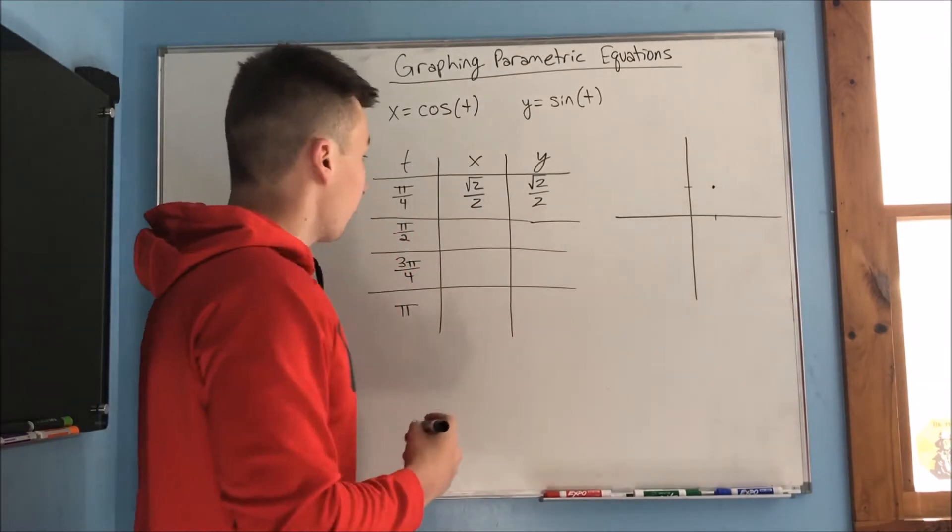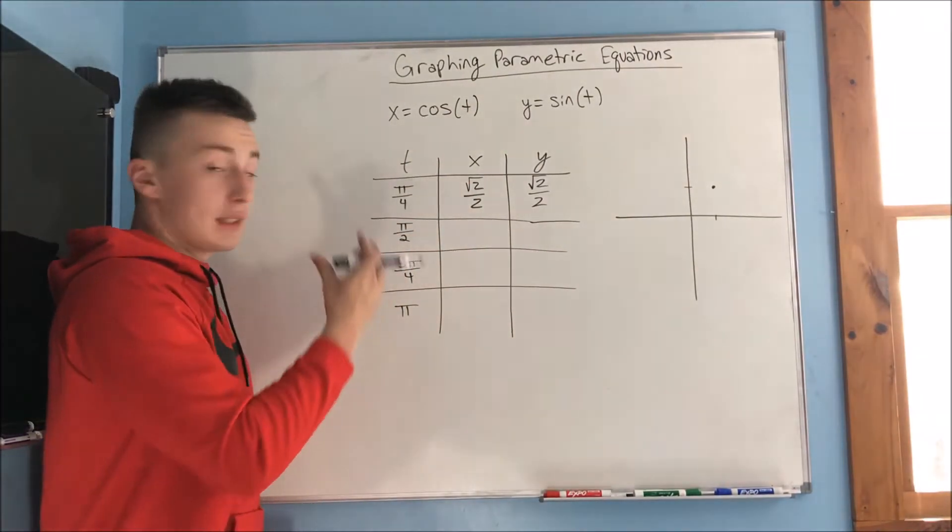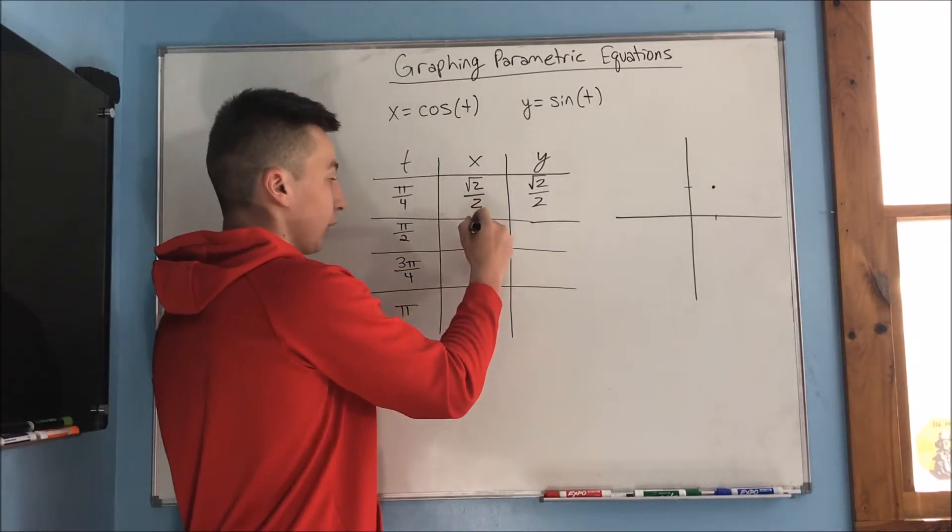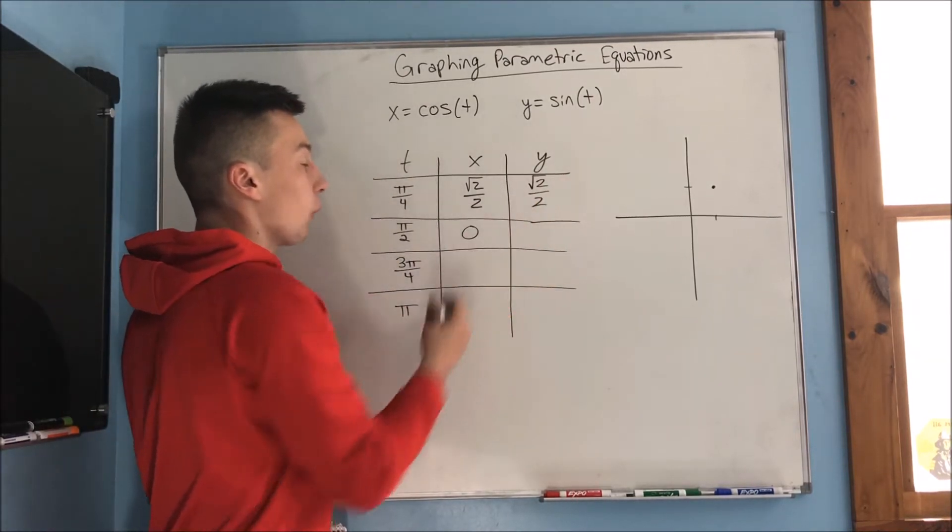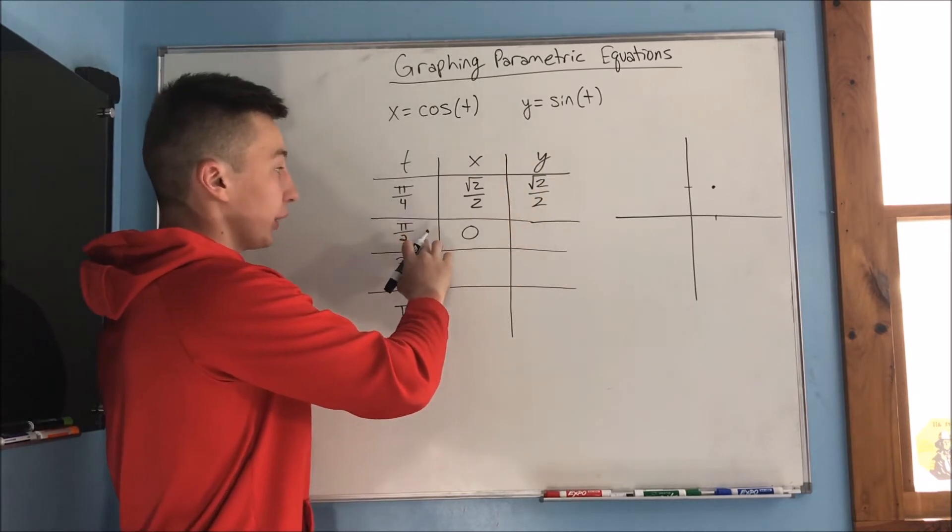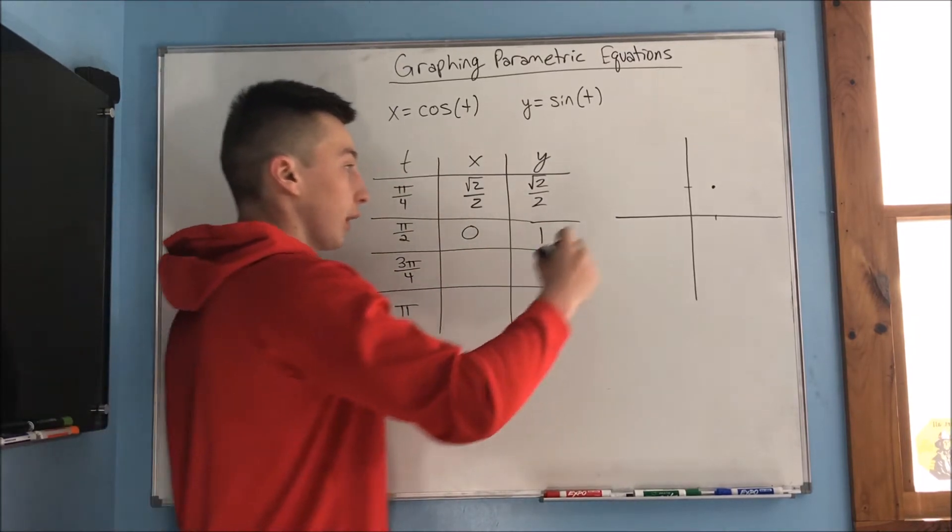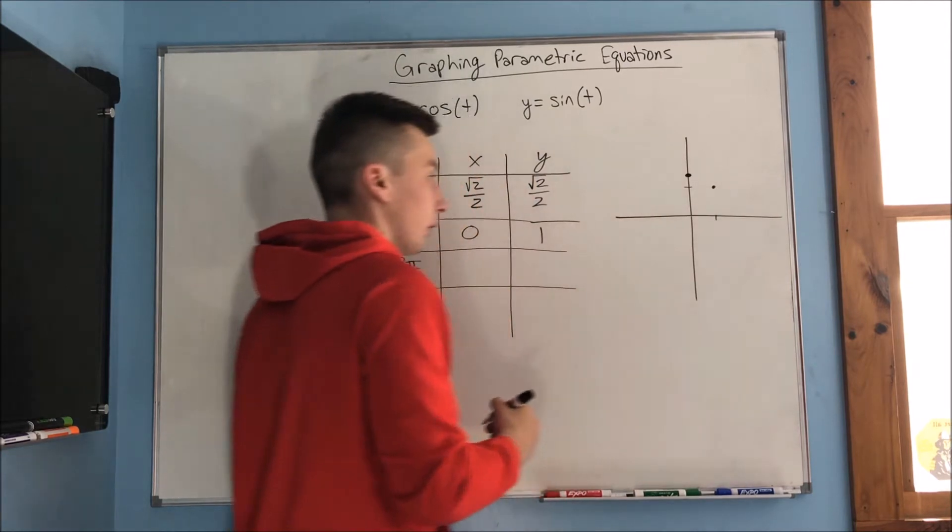So what about pi over 2? Well, if we have the cosine of pi over 2, that's 90 degrees. That's just going to be 0. So x is going to be 0 when t is pi over 2. And now, what about for y? Well, y is the sine of pi over 2 and that we know is 1. So pi over 2 is going to look something like this.